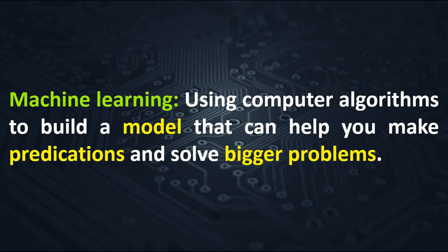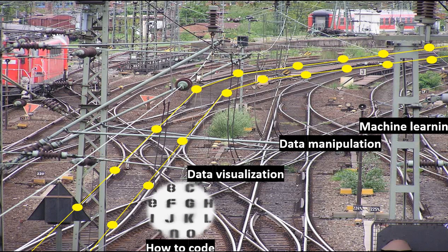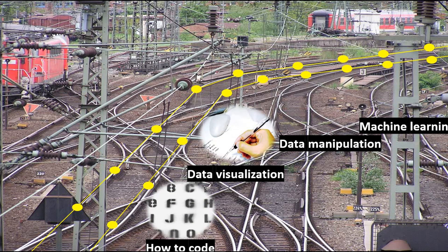Sometimes your problem cannot be solved with data visualization and data manipulation; you need to start using machine learning. So here's our roadmap: we need to start first to learn how to code, then start with data visualization, then data manipulation, and machine learning.